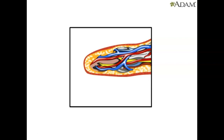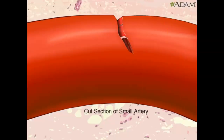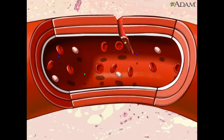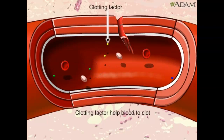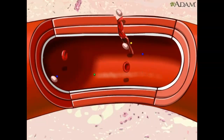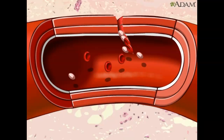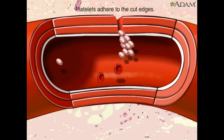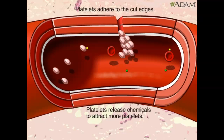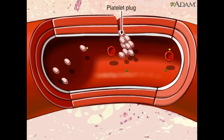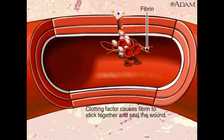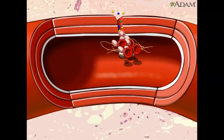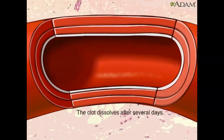Here's how platelets form clots. This small artery has a cut. Blood flowing past the cut includes red blood cells that carry oxygen, platelets that come from white blood cell fragments, and clotting factors that help blood clot. When a blood vessel is damaged, blood cells and plasma ooze into surrounding tissue. Platelets immediately stick to the edges of the cut and release chemicals that attract more platelets. Eventually, a platelet plug is formed and the outside bleeding stops. On the inside, clotting factors cause a cascade of activity — strands of fibrin stick together to seal the inside of the wound. Eventually the blood vessel heals, and several days later the blood clot dissolves.